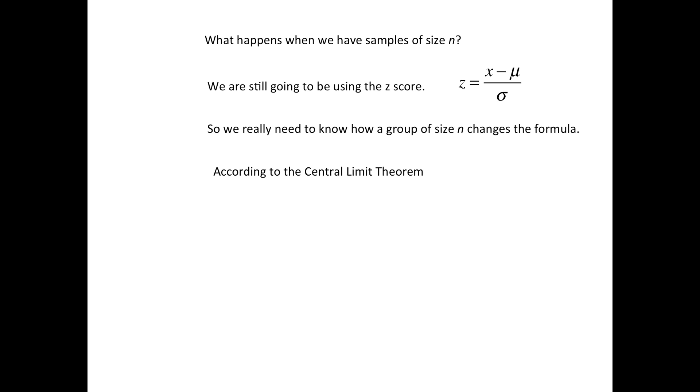If you break down the central limit theorem, it basically says that the average of the averages—in other words, you take all groups of size n, you take all the groups of size 35 and you find the mean. Well it turns out that the mean of all of those means is going to equal the overall mean. Which is good news because that means in this formula, this number does not change.